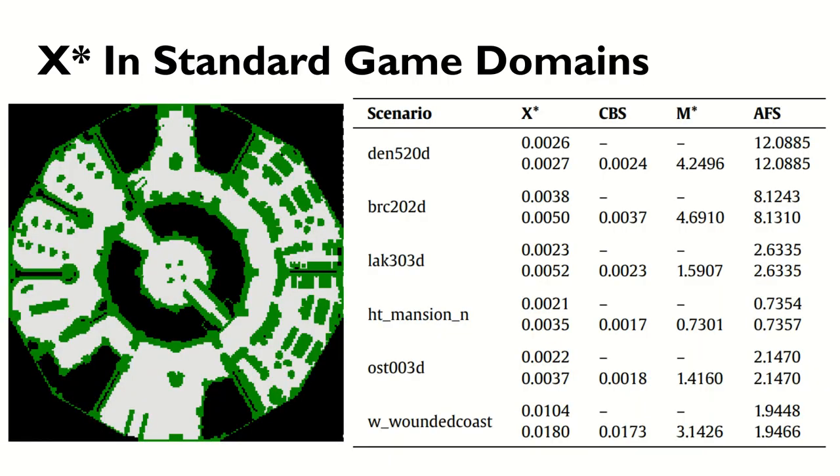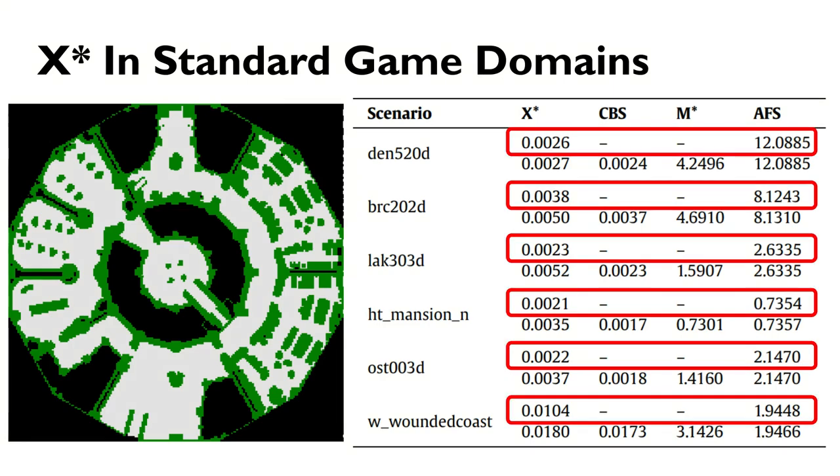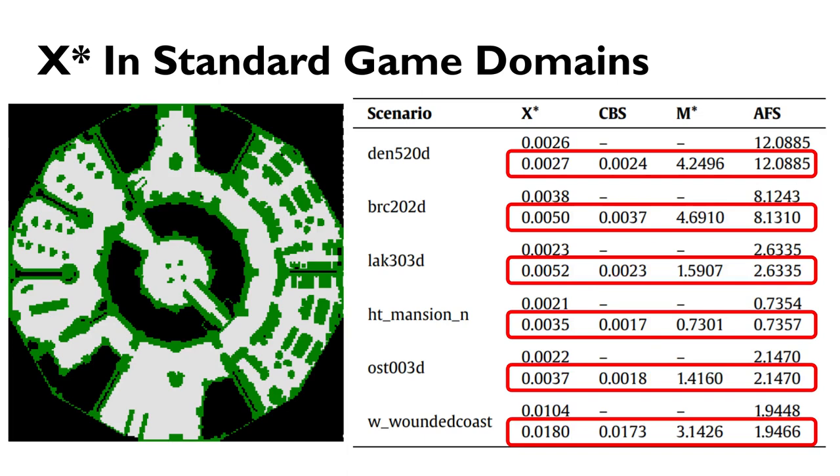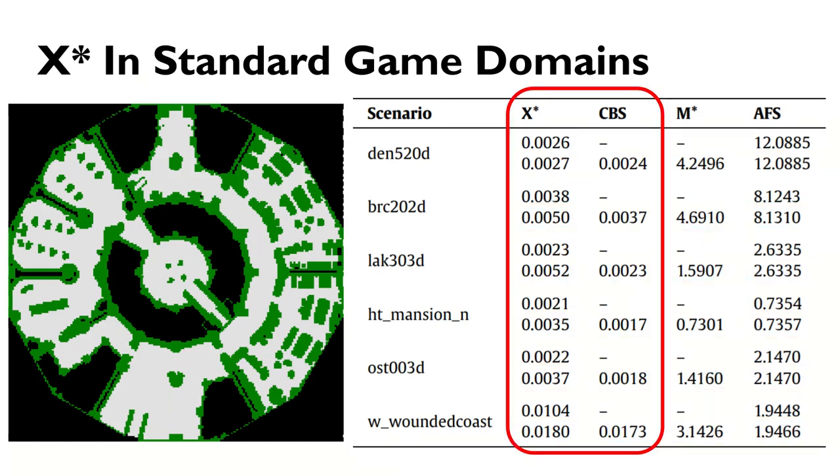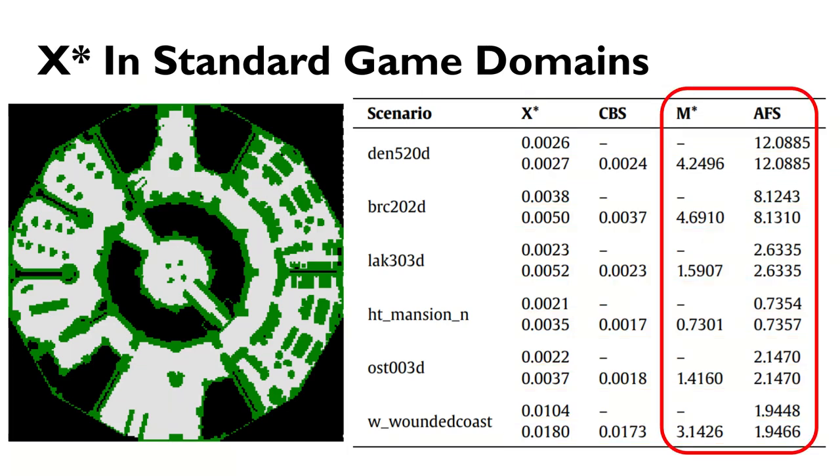On the Moving AI game domains, such as the LAC303D domain shown on the left, we benchmarked all 25 random instances of 50 agents and reported median time to valid path and median time to optimal path. X* and CBS are both extremely fast due to the high degree of collision sparsity in these domains, outperforming M* and AFS by two orders of magnitude.